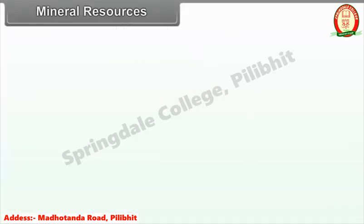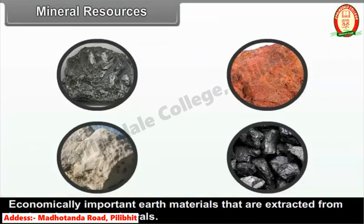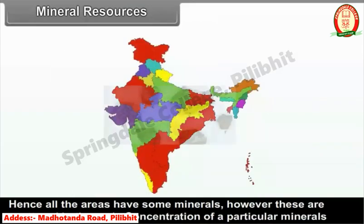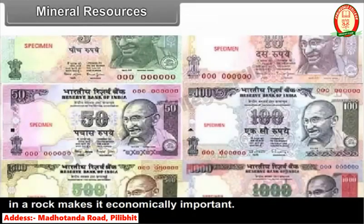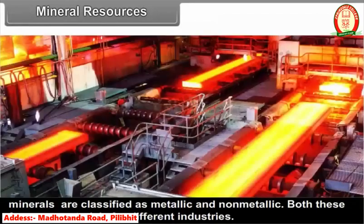Economically important earth minerals extracted from land are known as minerals. Basically all rocks are a mixture of different minerals, though they are scattered in the rock. Concentration of a particular mineral in a rock makes it economically important. Minerals are classified as metallic and non-metallic, and both form raw materials for different industries.